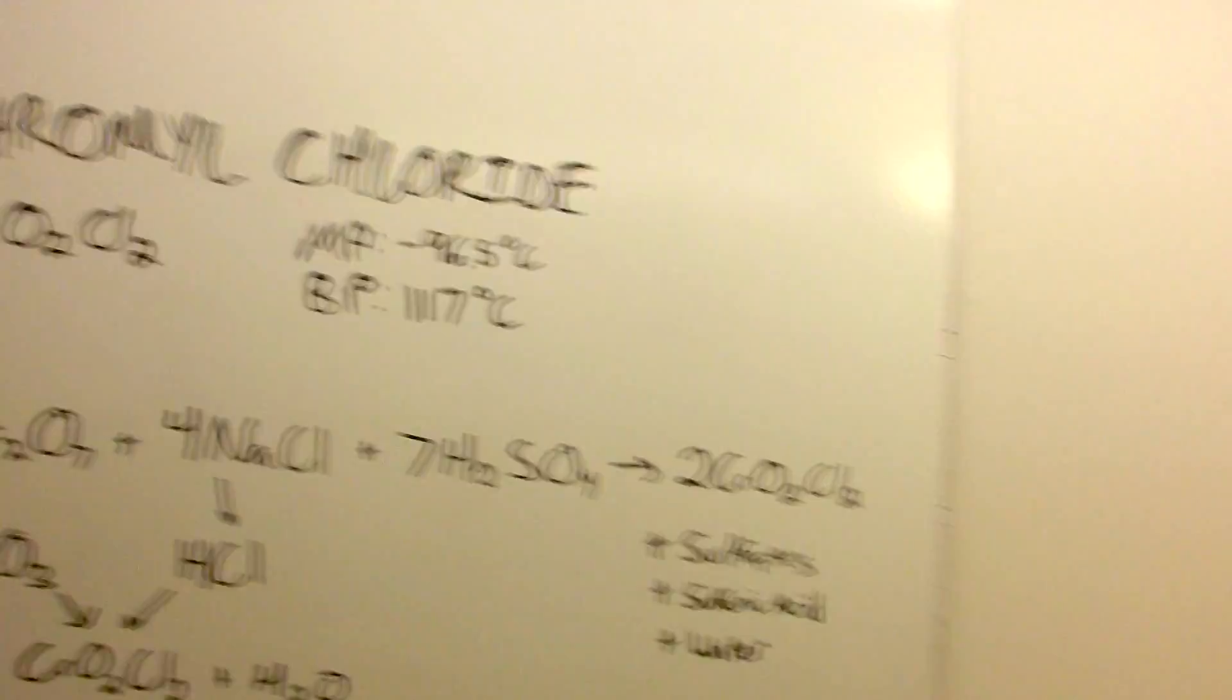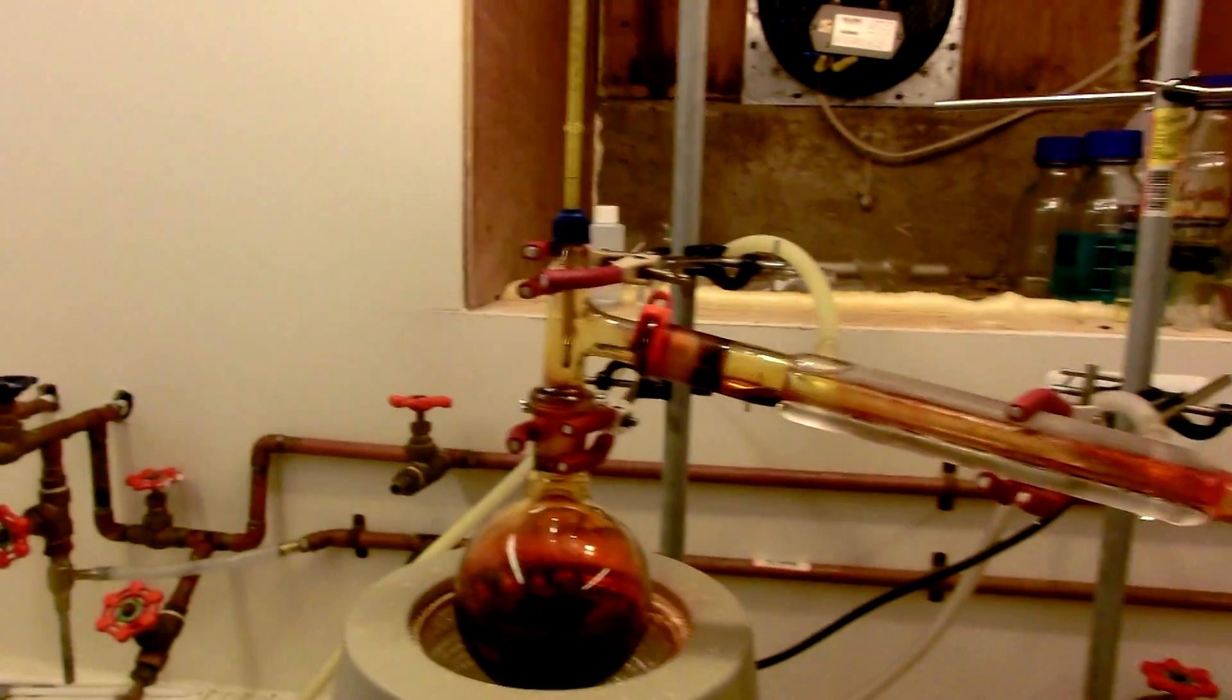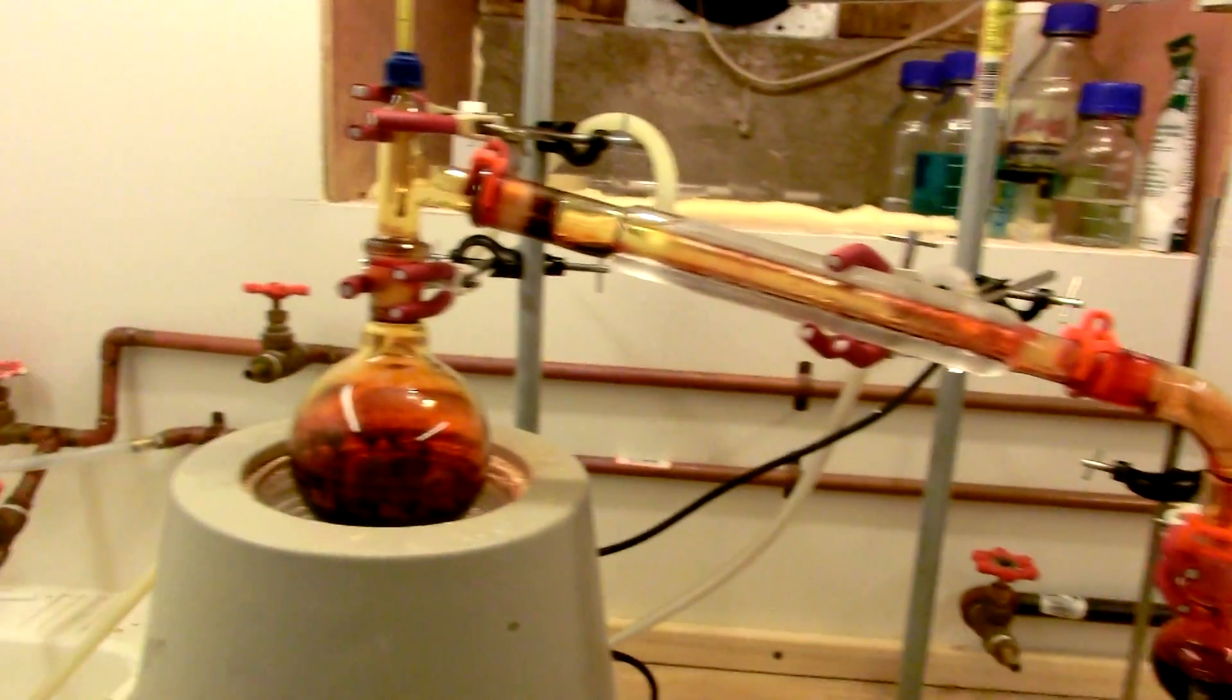All of the chromal chloride came over at about 112 Celsius, which pretty much corresponds to the 117 as predicted.